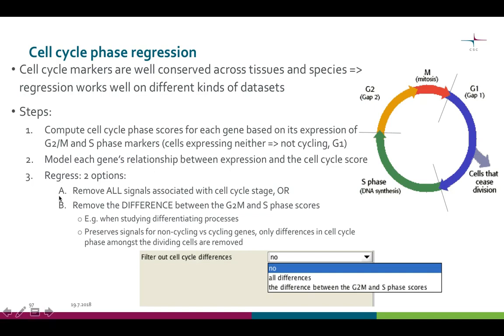To regress out variation caused by the different cell cycle stages, there are two options. You can either remove all signals associated with a cell cycle, or just the difference between the G2M and S phase scores.